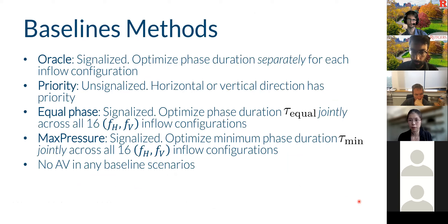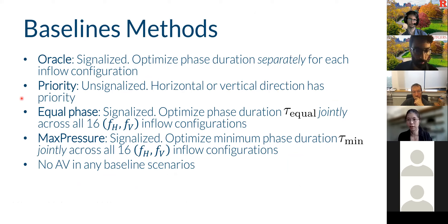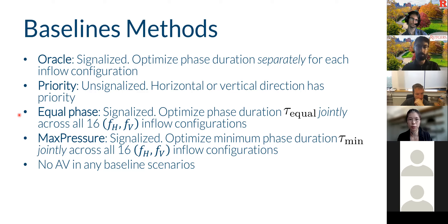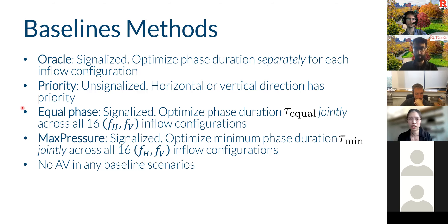We compare against traffic signal baselines since our scenarios have no traffic signals — standard comparison points for intersections. We use equal-phase and max-pressure baselines, as well as an Oracle baseline that separately optimizes phase for each of the 16 inflow configurations, while the other baselines are optimized over all 16 jointly. We use policy gradient methods and do multitask training over the 16 different inflow configurations.